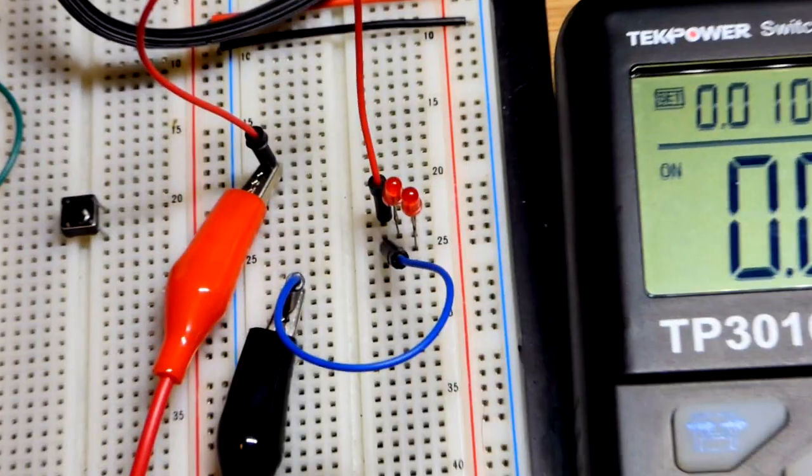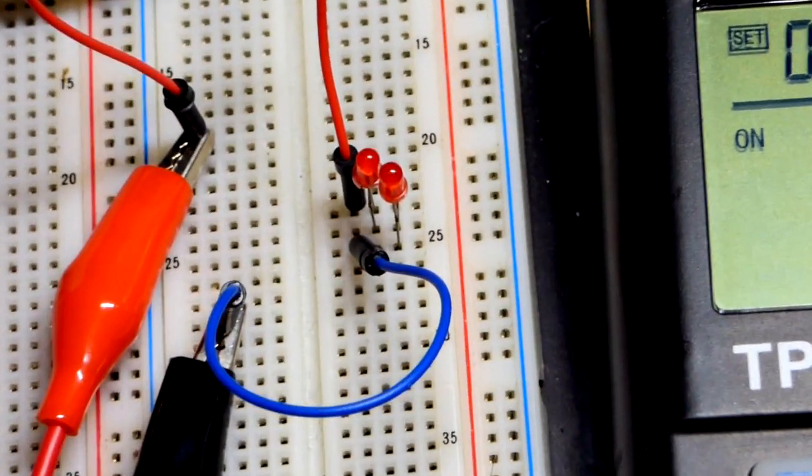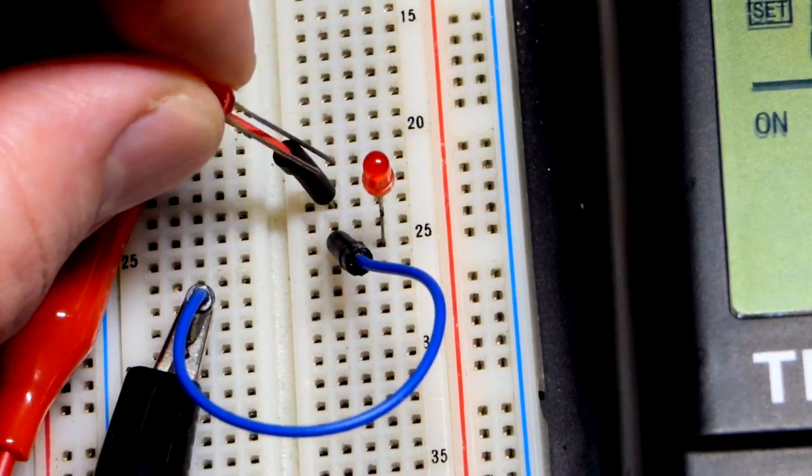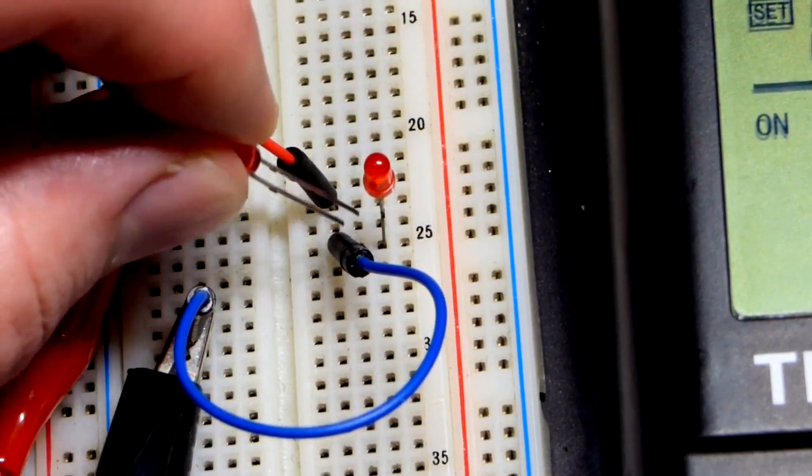So we will zoom in and take a closer look. One of these LEDs is forward biased, the top one here. You can see the long lead, the anode, going to where the red jumper is. The short lead, the cathode, going down one row.